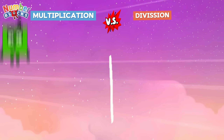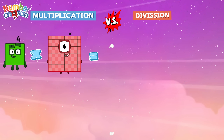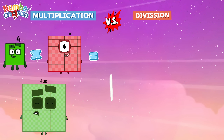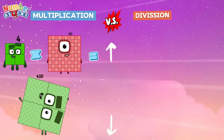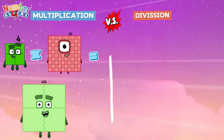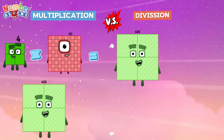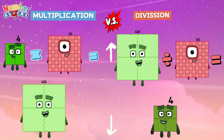Four multiplied by one hundred is equal to four hundred. And now, in division, let's try: four hundred divided by one hundred is equal to four.